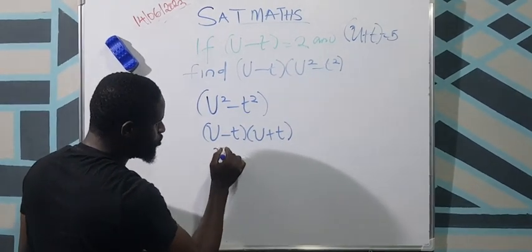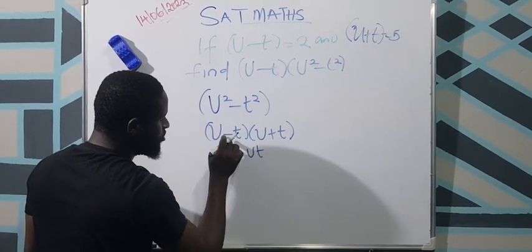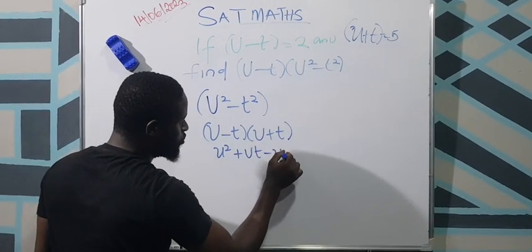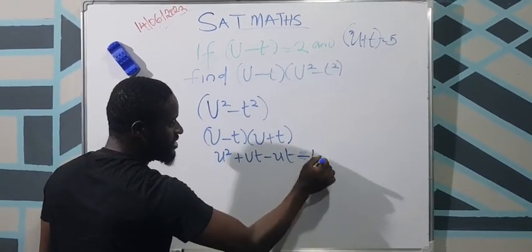Because u times u, you have u square. U times plus t, you have plus ut. Minus t times u, you have minus ut. Minus t times plus t, you have minus t square.